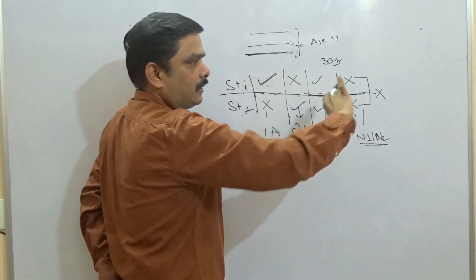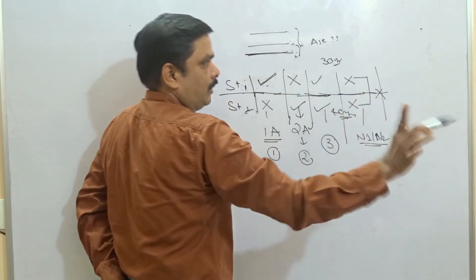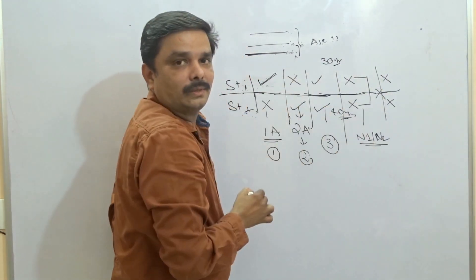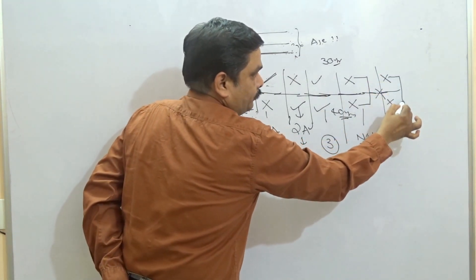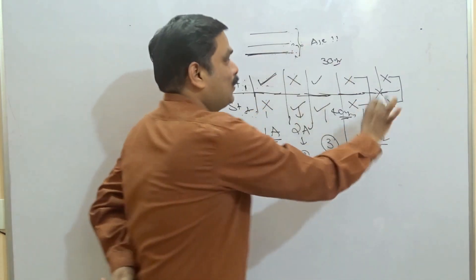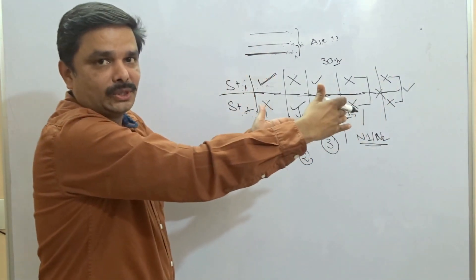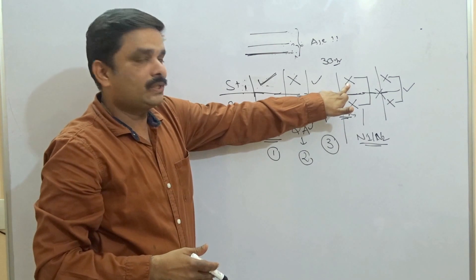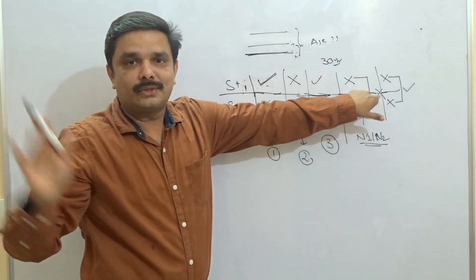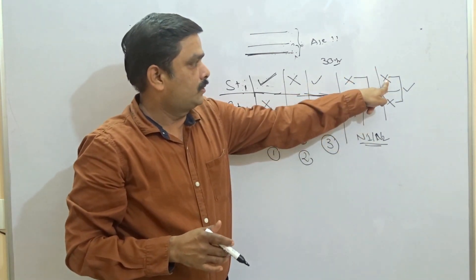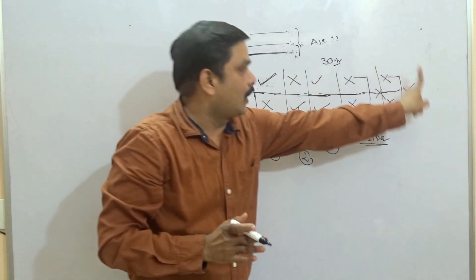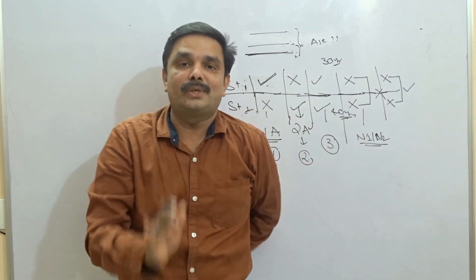When to go for Option 5? The same scenario — with Statement 1 alone, no answer; with Statement 2 alone, no answer. You combine both statements. After combining, you are able to answer the question. The difference from Option 4: in Option 4, even after combining you cannot answer. In Option 5, after combining you can answer. Your answer is Option 5. Many questions in competitive exams have Option 5 as the correct answer.